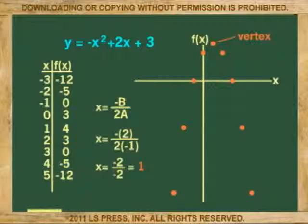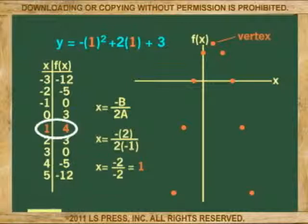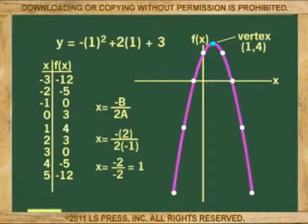We now solve the original equation to find the value of y when x equals 1. But we see that the table already has it at 4. So the vertex of the parabola is at 1, 4. We now plot the equation.